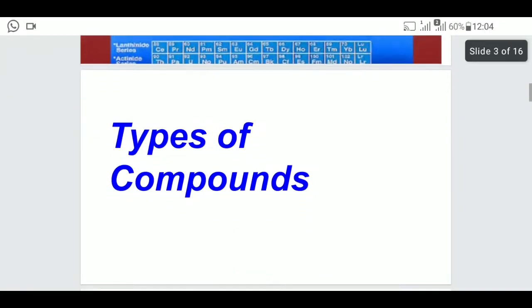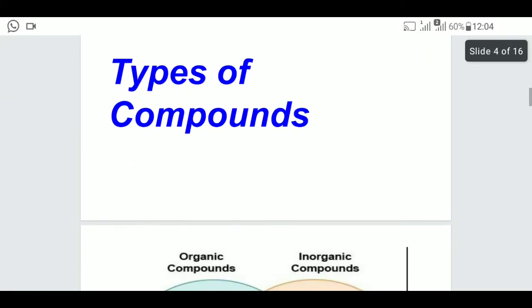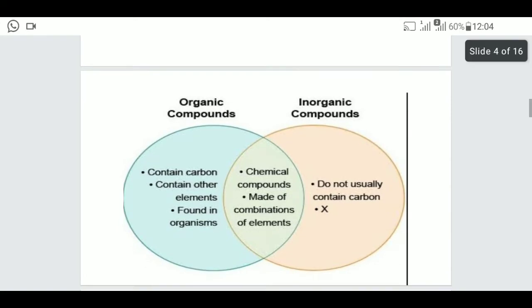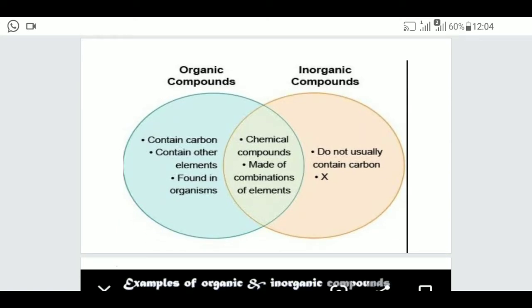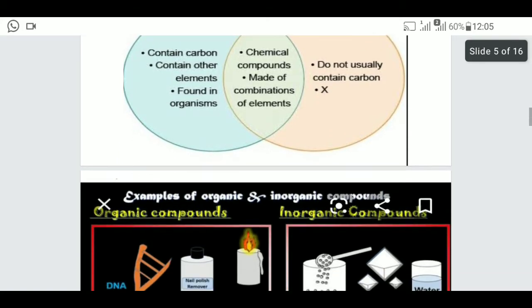The next part is the types of compounds. There are two types of compounds: organic compounds and inorganic compounds. Organic compounds are compounds which contain carbon — we ourselves are also organic. Usually, whatever thing burns and converts to a black color is an organic compound. Inorganic compounds are those which do not contain carbon.